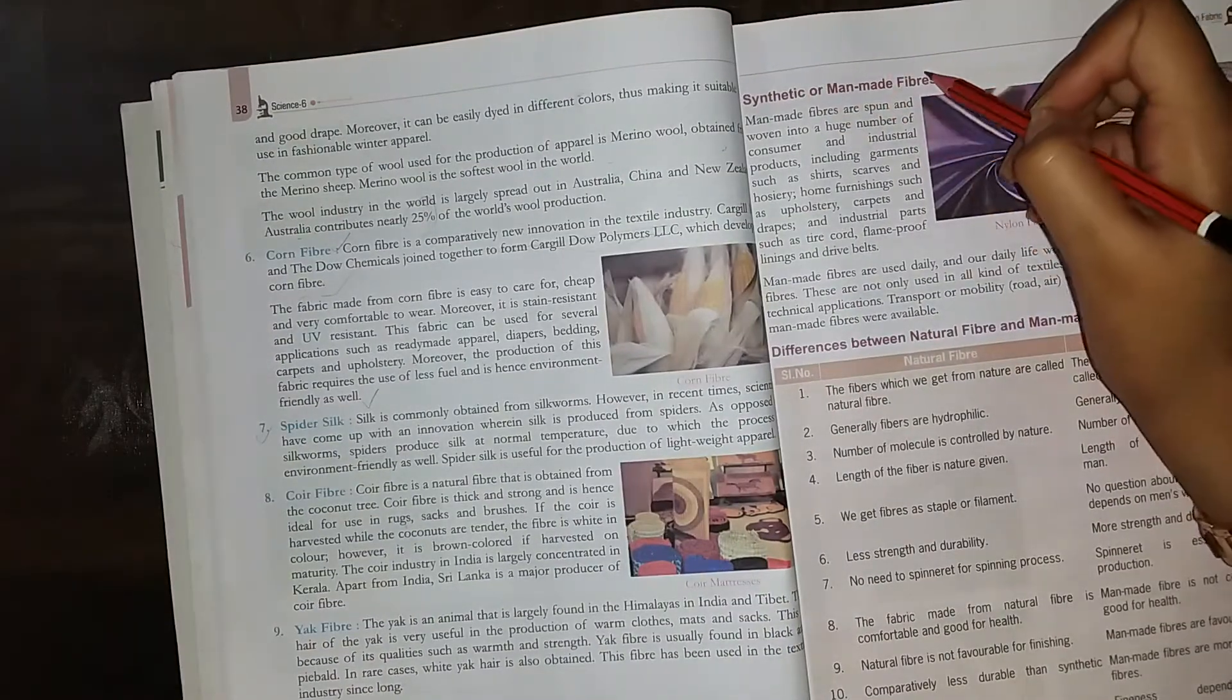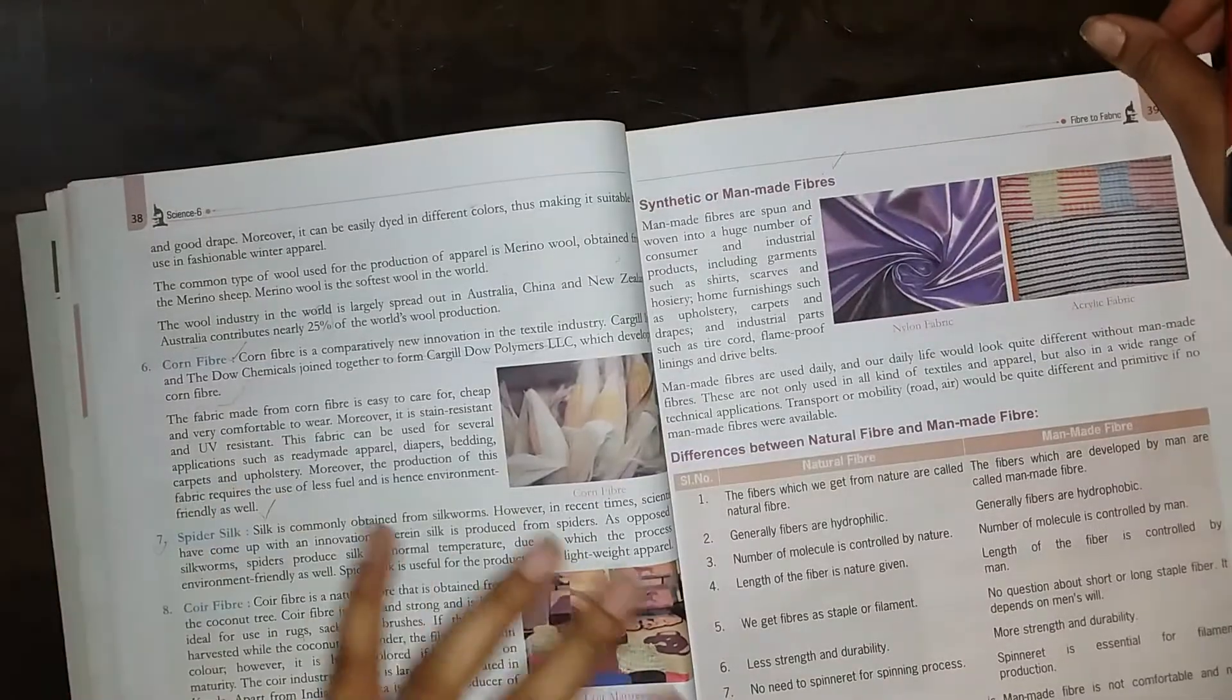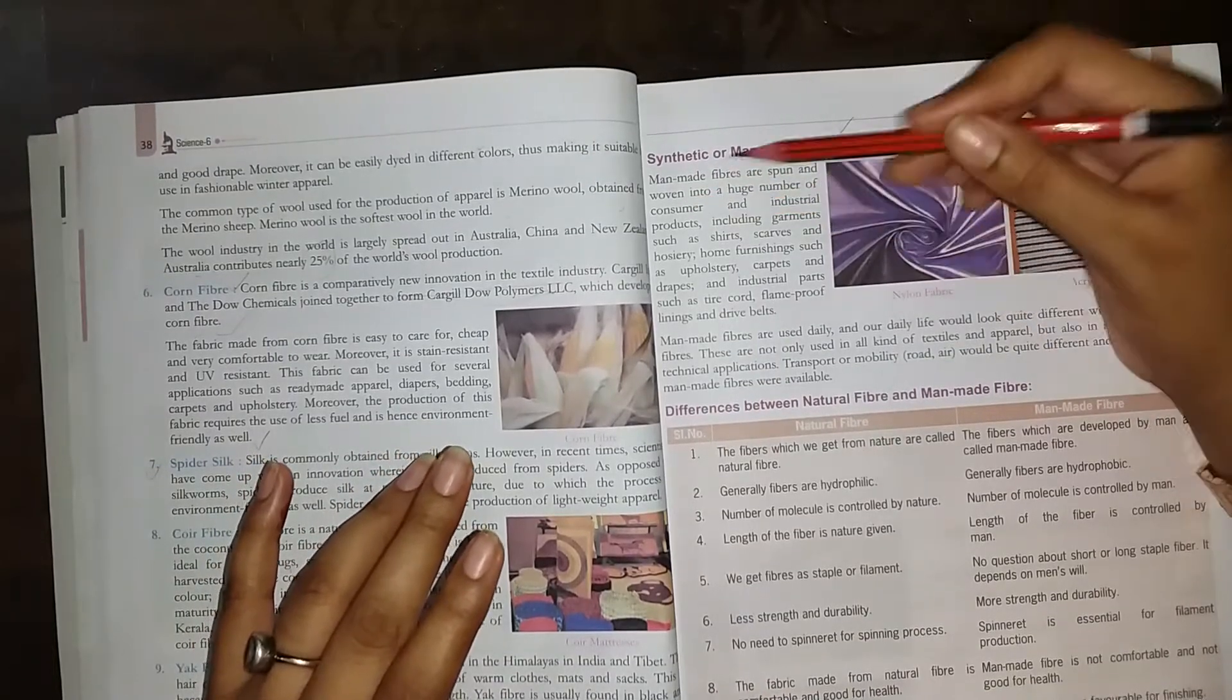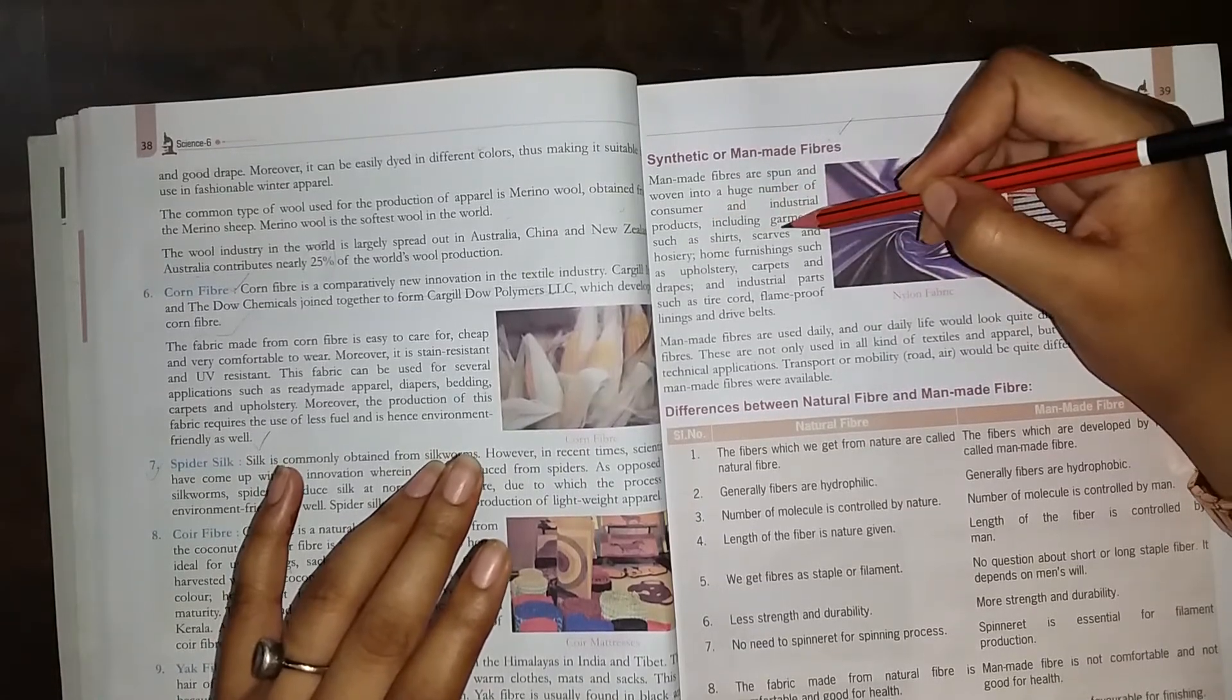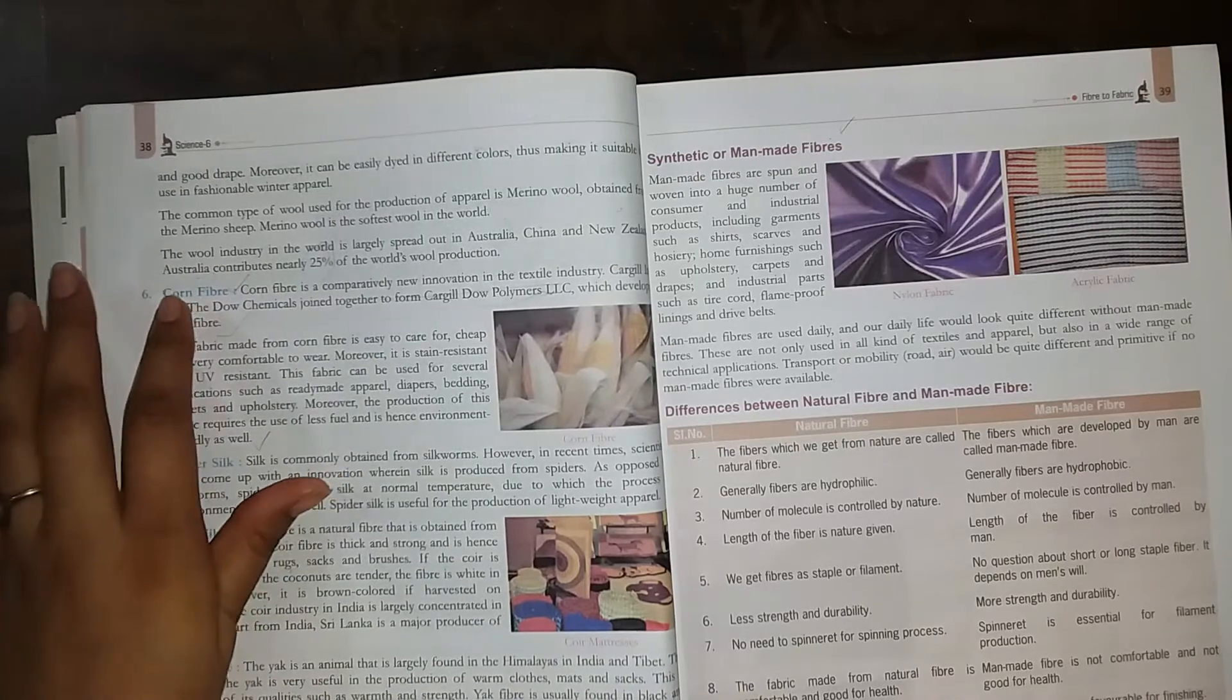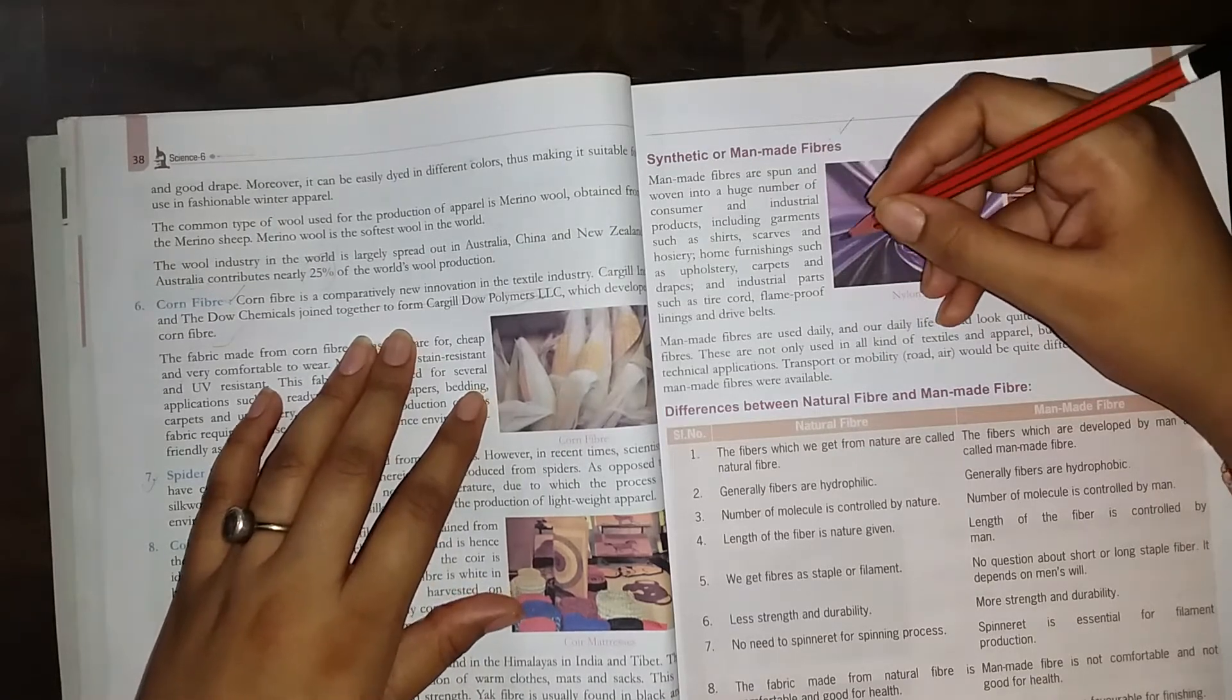Synthetic and man-made fiber. These fibers are synthetic or man-made. Man-made fiber is spun and woven into a huge number of consumer and industrial products including garments such as shirts, scarves, hosiery, home furnishings, and carpet.